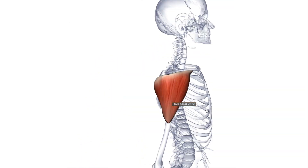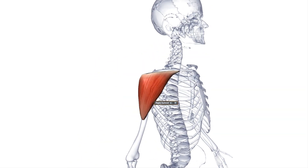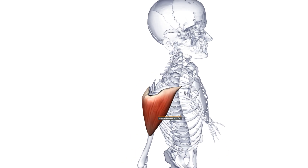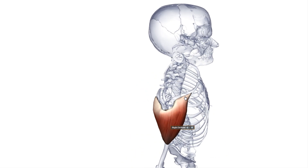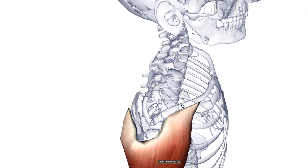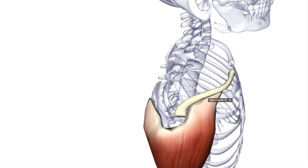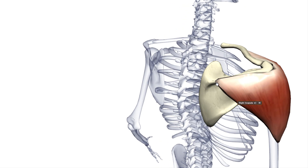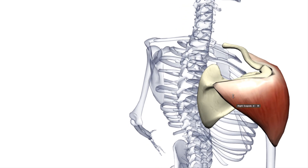Here is the right deltoid muscle. The deltoid muscle has the origin here on the clavicle. It also has the origin on the acromion. This part of the scapula is the acromion, and it also has the origin here on the spine of the scapula.